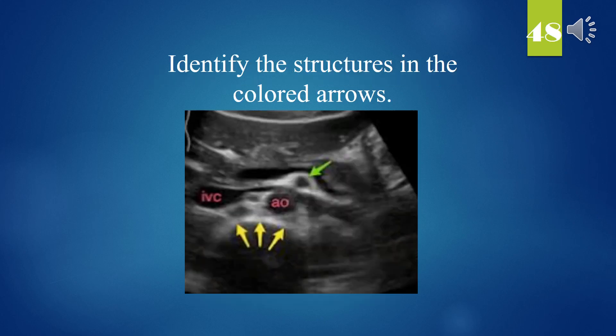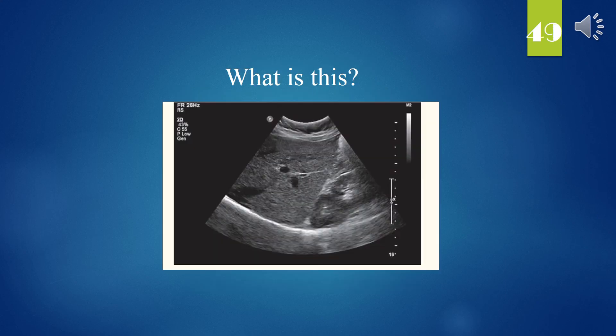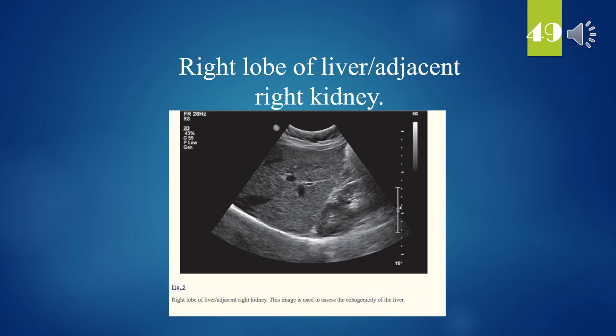Identify the structures in the colored arrows. Green: SMA. Yellow: border of the spine. What is this? Right lobe of liver, adjacent right kidney.